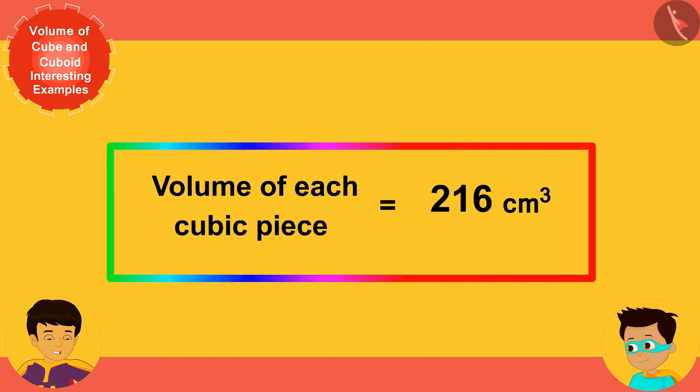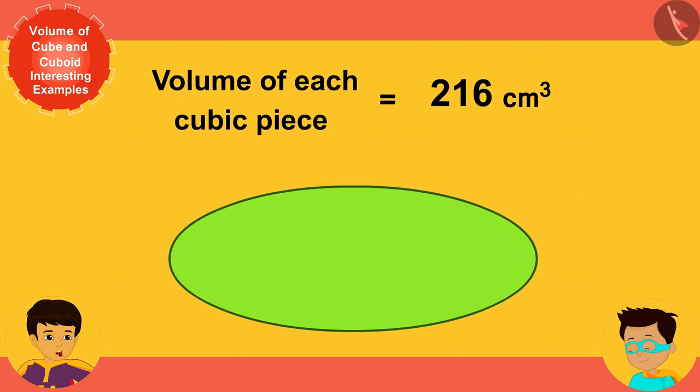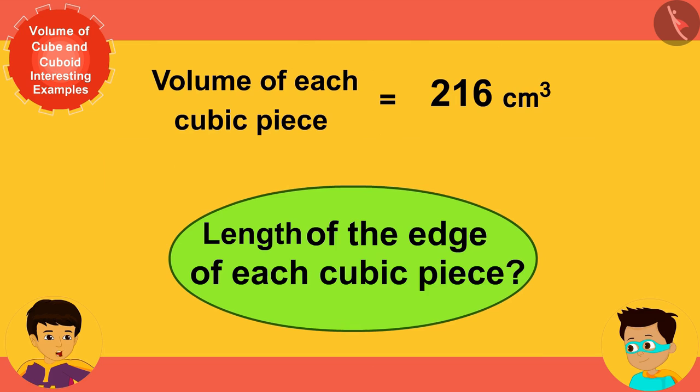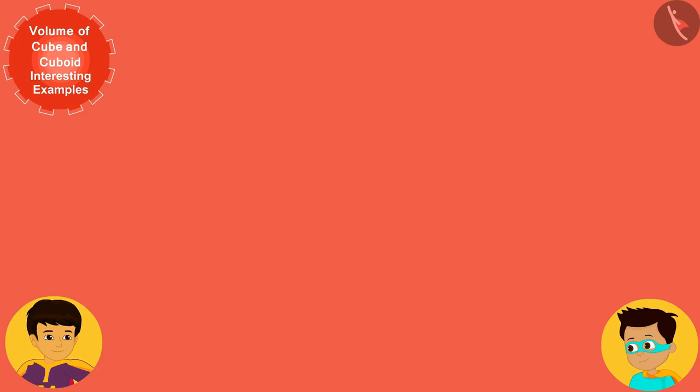Now we have also come to know the volume of each piece of cake, but now how will we find the length of the edge of each cubic piece? It's simple, because the volume of a cube is the cube of its side.